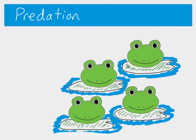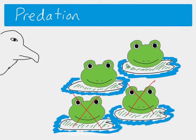The next two selection pressures are predation and disease. For predation, these frogs are preyed upon by some kind of eagle, and some frogs are less able to evade the predator — maybe they're not as good at spotting it, maybe their skin colour makes them stand out more, or maybe they're not quick enough at jumping off the lily pad into the water when the eagle sweeps down.